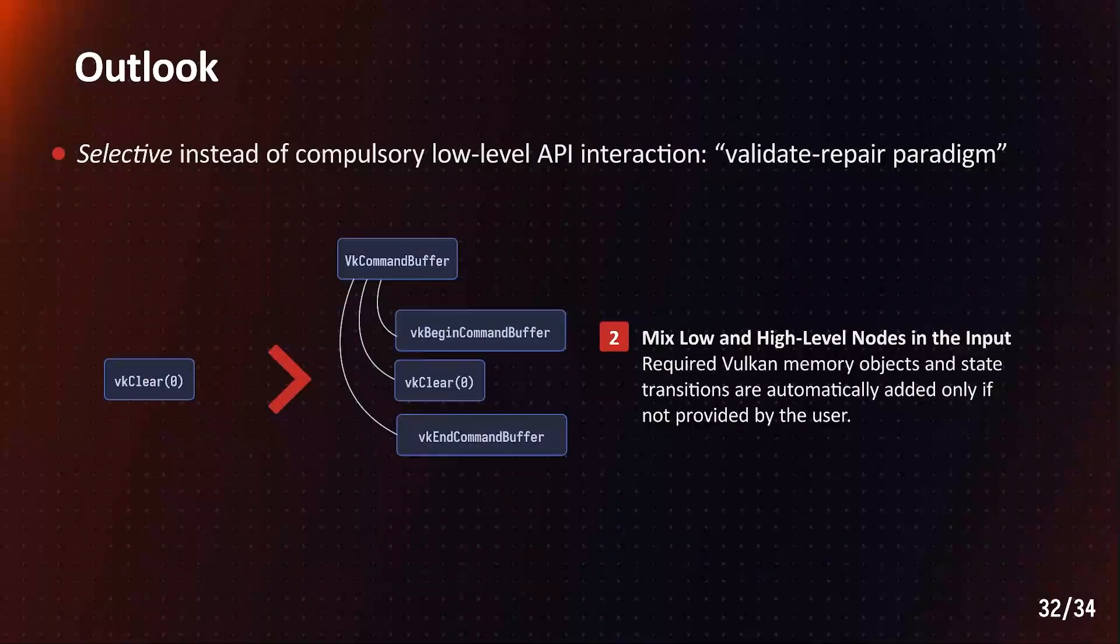A cool feature of this method is that it allows us to selectively write low-level Vulkan by mixing high-level instructions with low-level instructions. We usually insert API functions for command buffer recording automatically, but the user may include them manually, for example, if he wants different usage flags.